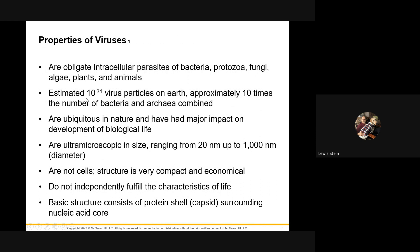Viruses are ubiquitous — extraordinarily small and found everywhere. The size relationship is telling: if you think about how small bacteria look under the microscope at a thousand times magnification, a virus to a bacterium is roughly that same relationship again. So viruses are orders of a thousand to a million times smaller than the E. coli you already have trouble finding under the microscope.